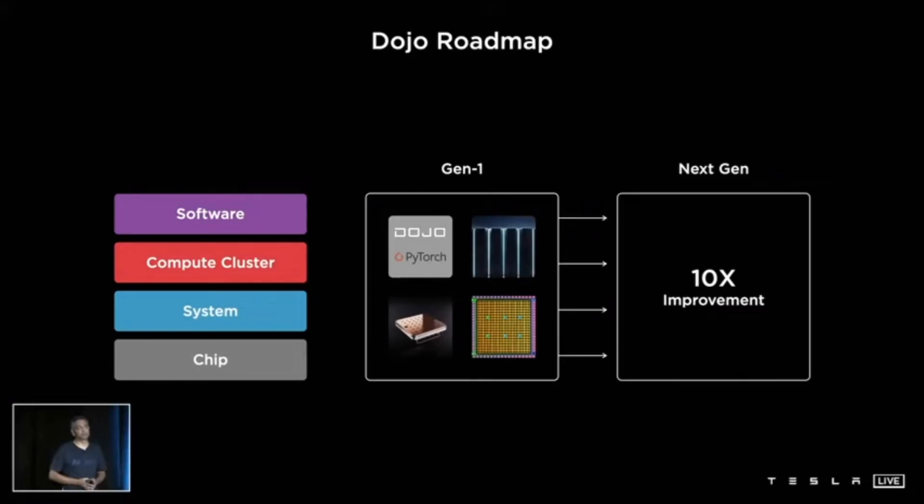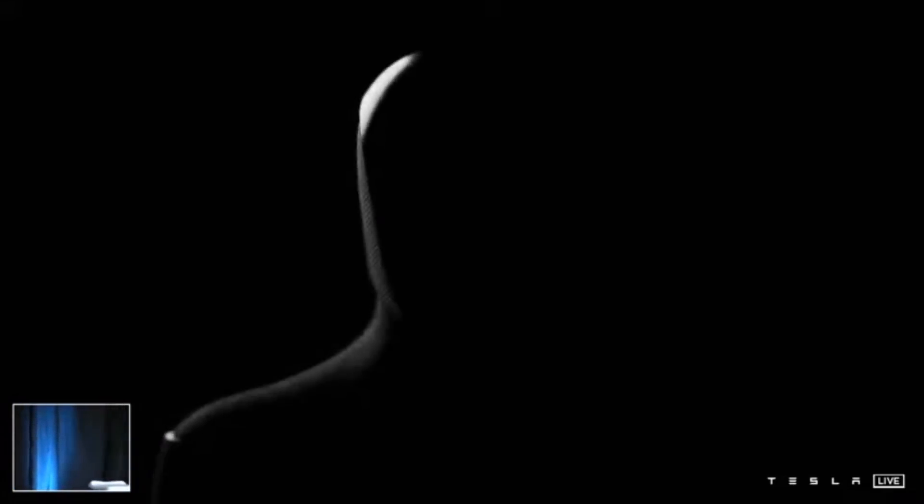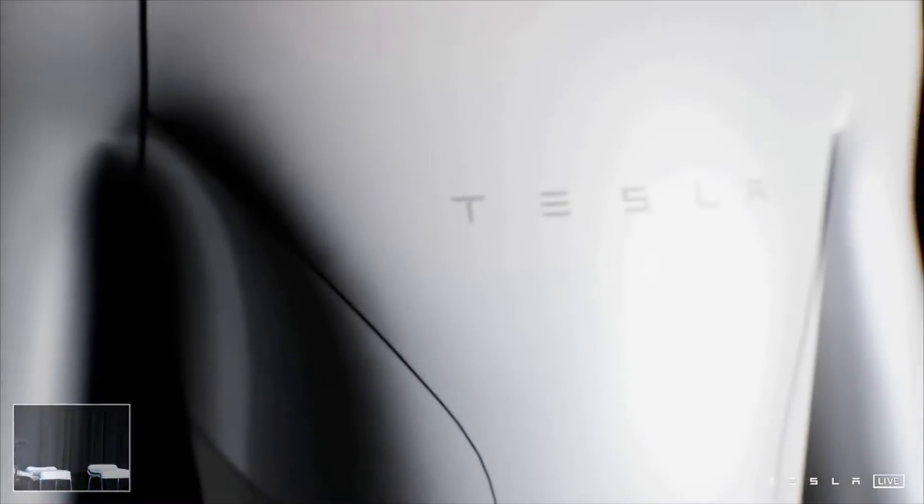But then Tesla turned it up a notch. There had been a lot of speculations about what kind of robot Tesla would reveal, but most didn't even dare to dream about a humanoid robot because it just seemed so far-fetched. But that was exactly what Tesla revealed. That has to be up there with some of the best 'one more thing' I have ever seen.